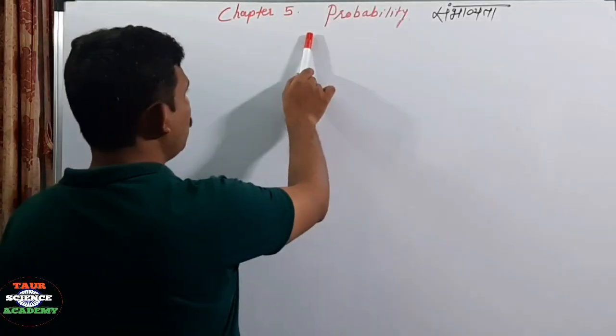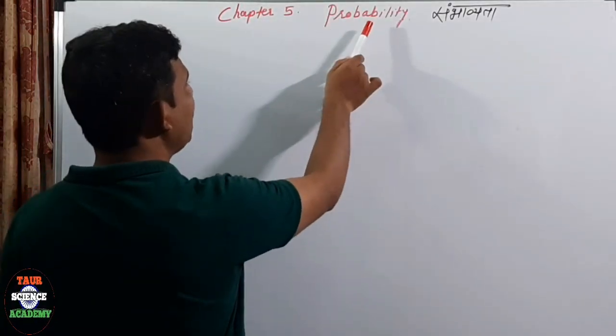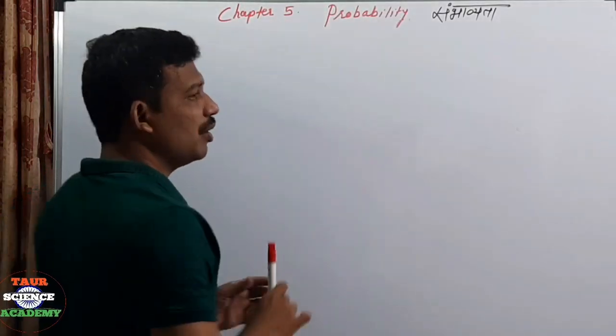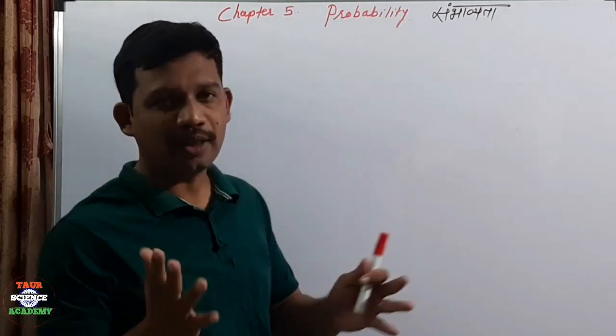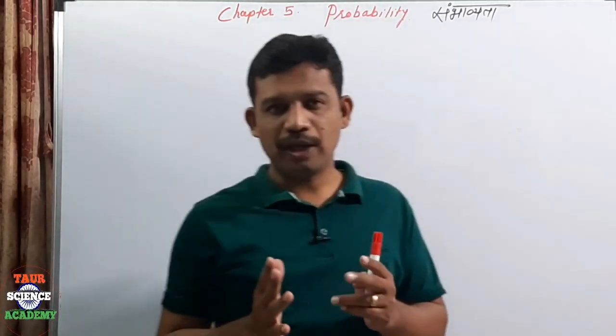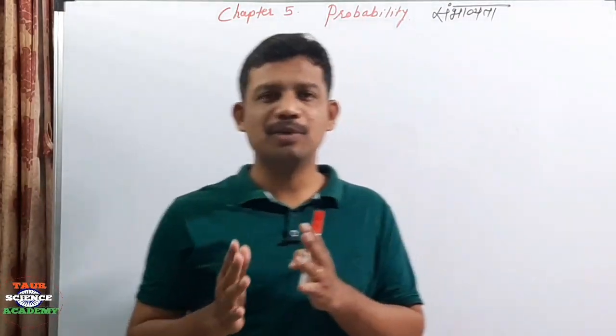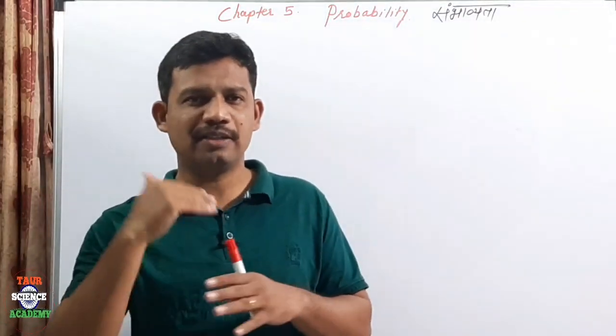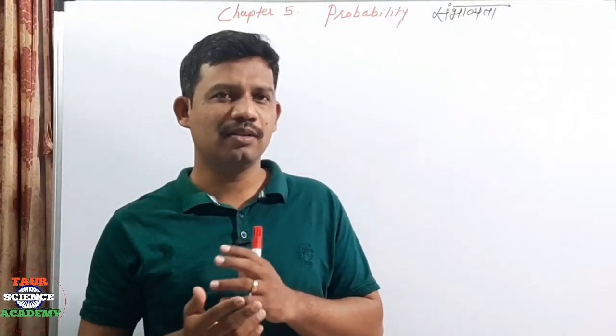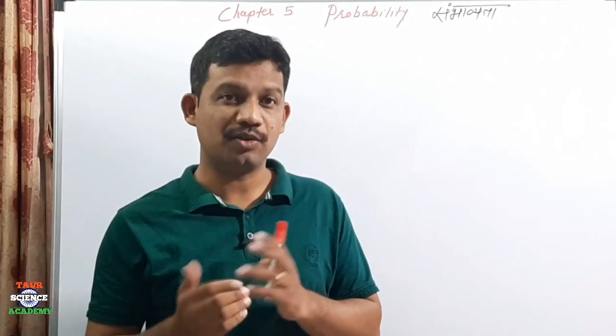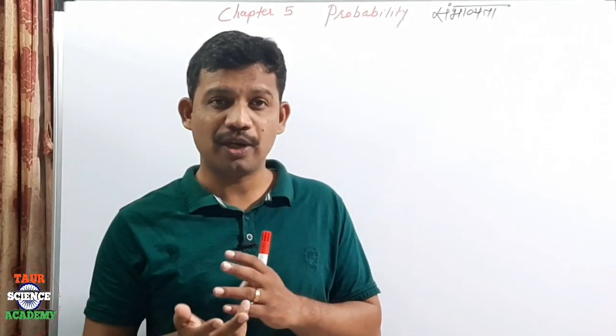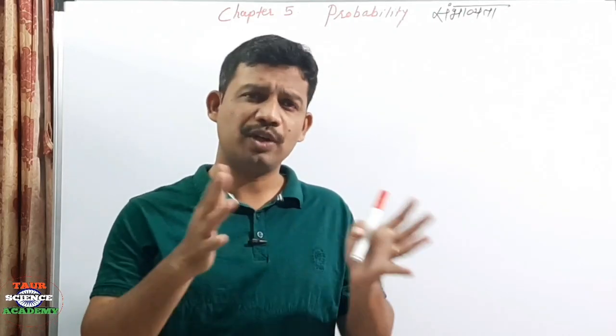Let's start with Chapter number 5, that is Probability. In Marathi it is called Sambhaveta. Sambhaveta means Sambhavana, Shakyata — that is, possibility.